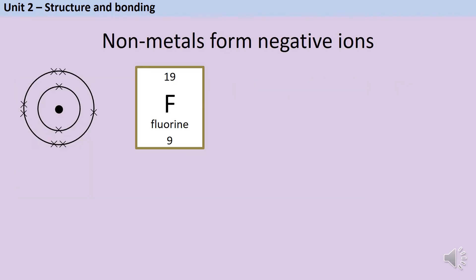Let's start by looking at non-metals. Here we have a fluorine atom. From the periodic table, fluorine has an atomic number of nine, which means it has nine positive protons and nine negative electrons. Atoms form bonds to become more stable, and the easiest way is to have a full outer shell. Fluorine currently has seven electrons in its outer shell — it's in group seven, and the group number tells us how many electrons are in the outer shell — so it needs to gain one electron. We draw this as a dot rather than a cross just to show it's come from a different atom, but they're all just electrons.